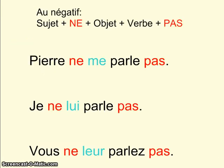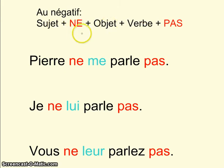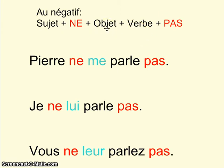Au négatif, c'est la même chose: sujet, objet, verbe. Mais le ne et pas sont autour du verbe et de l'objet. Pierre ne me parle pas. Je ne lui parle pas. Vous ne leur parlez pas.